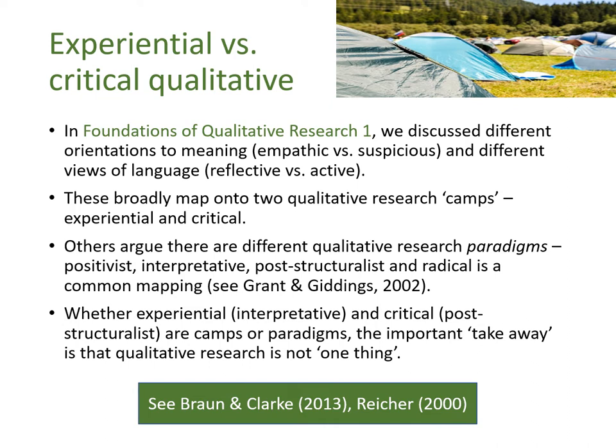These different orientations to meaning and language broadly map onto two qualitative research camps within a big Q paradigm: experiential qualitative research and critical qualitative research. The way we map out qualitative research here isn't something every single qualitative researcher agrees on. Others argue there are different qualitative research paradigms. A common mapping discussed by Grant and Giddings includes a positivist or post-positivist paradigm, an interpretive paradigm, a post-structuralist paradigm, and a radical paradigm.